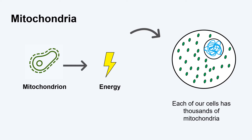These structures have other jobs in our cells. One of those structures is called a mitochondrion, or mitochondria if we are talking about more than one. The mitochondria are represented by the green ovals.